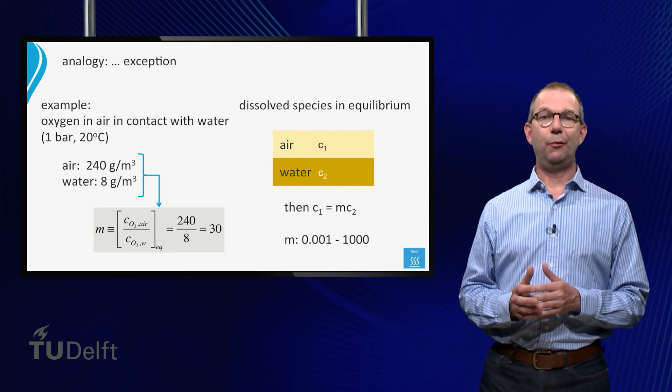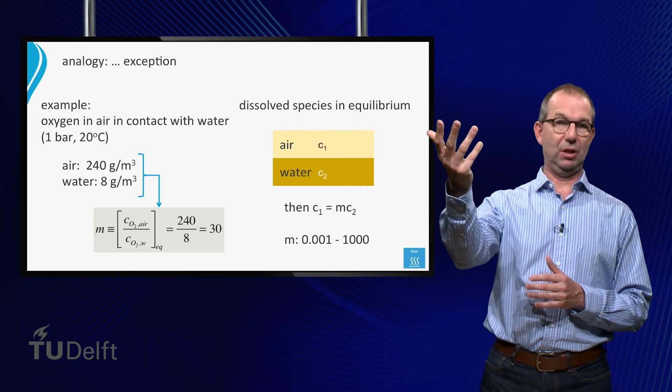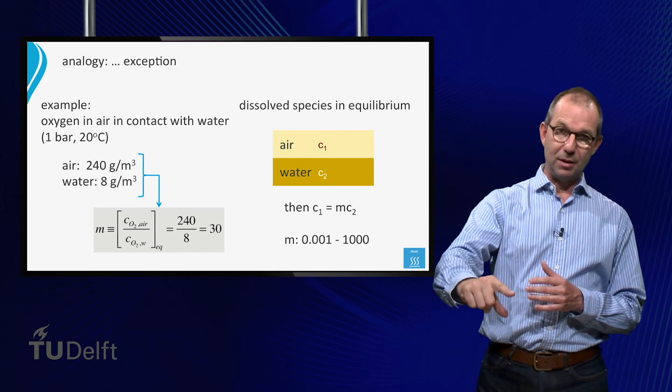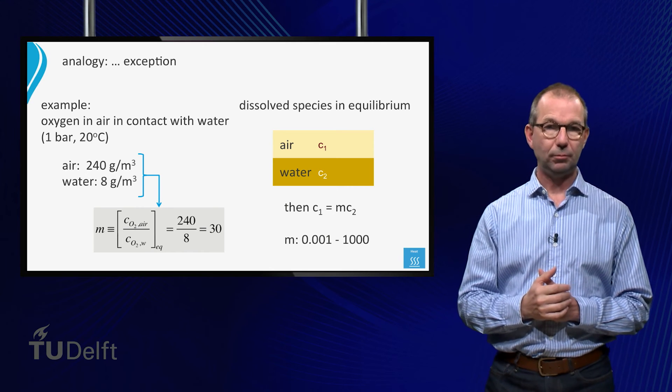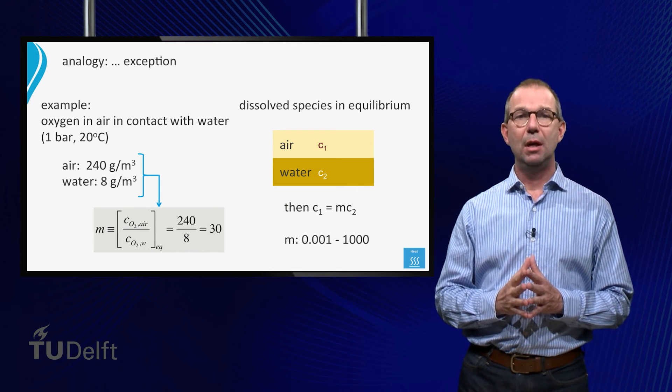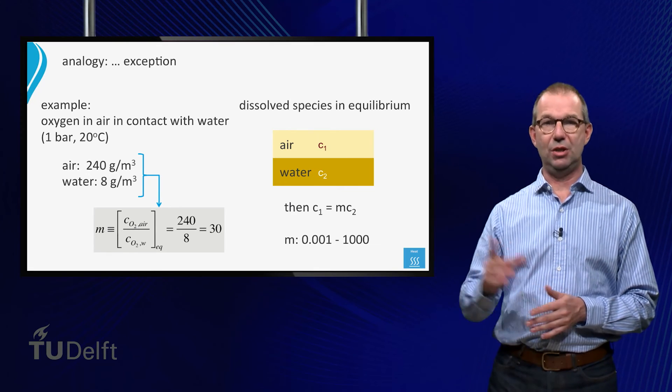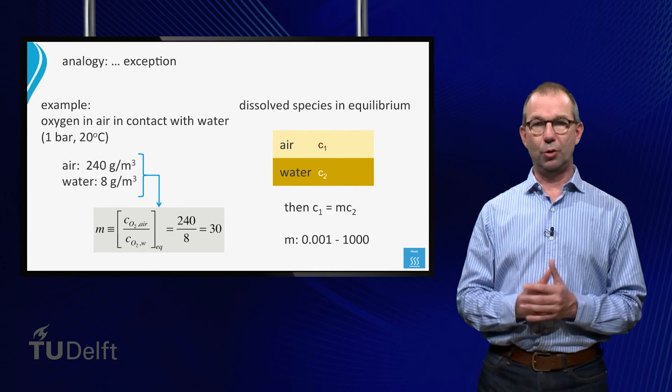The value of M, defined as the oxygen concentration in air divided by that in water, is thus 30 indeed, far from 1. These M values can be found for all kinds of substances in tables, in books or on the internet.